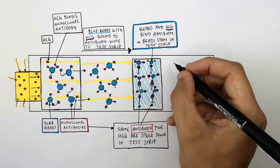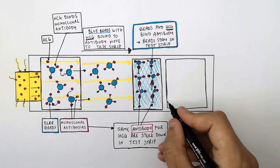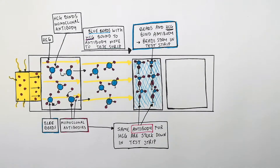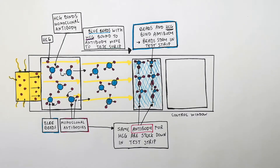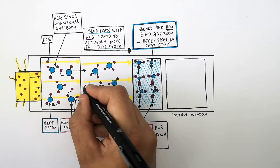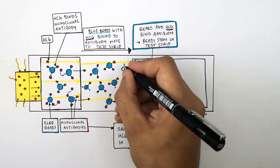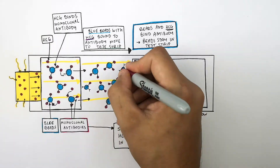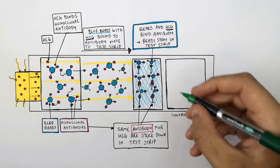To confirm pregnancy, two lines need to appear blue. The next line is the control window. The blue dye beads — with the HCG attached to the antibodies — move down through the first test strip, since all of those antibodies have been bound, and then flow through into the control window.